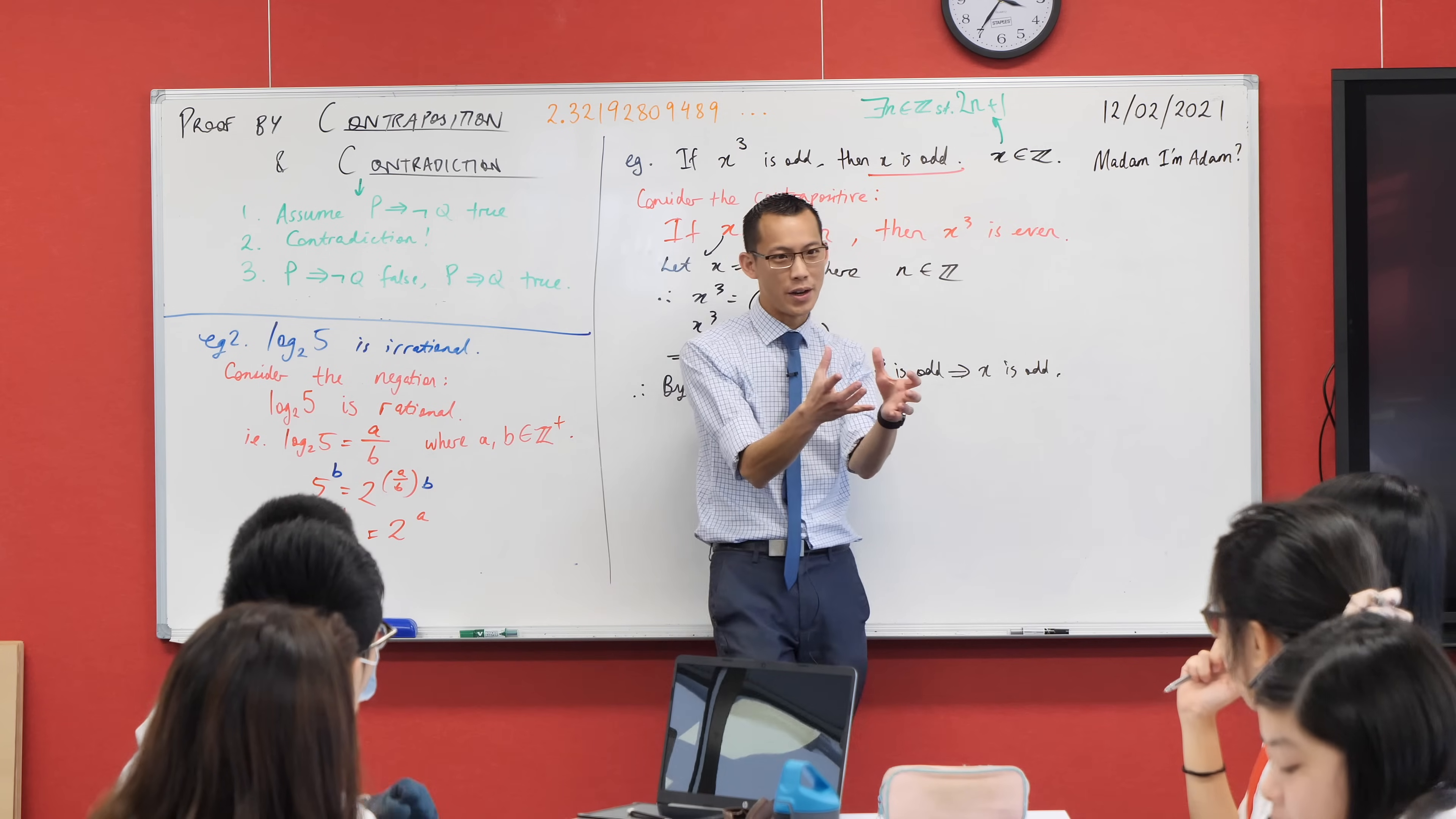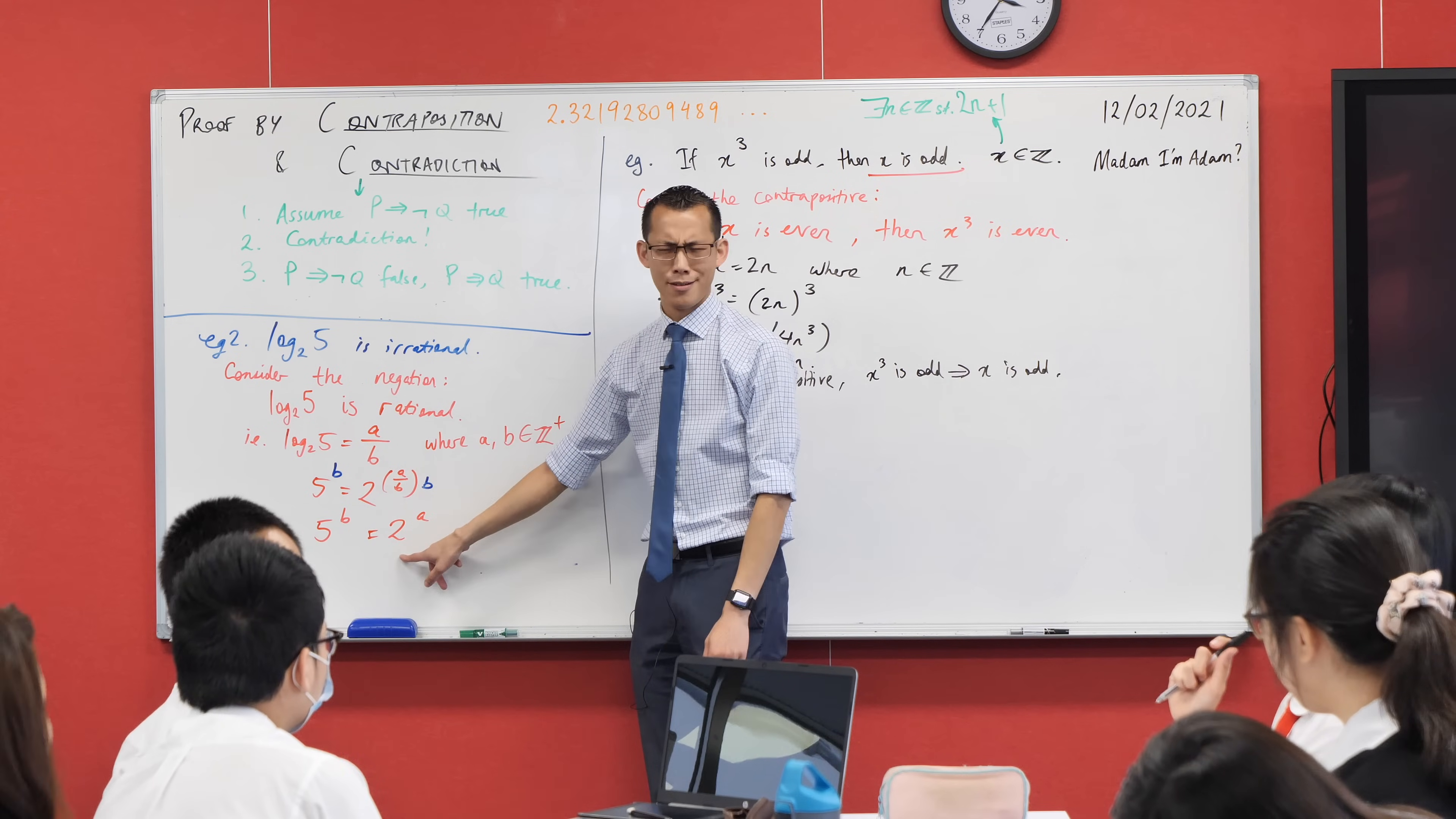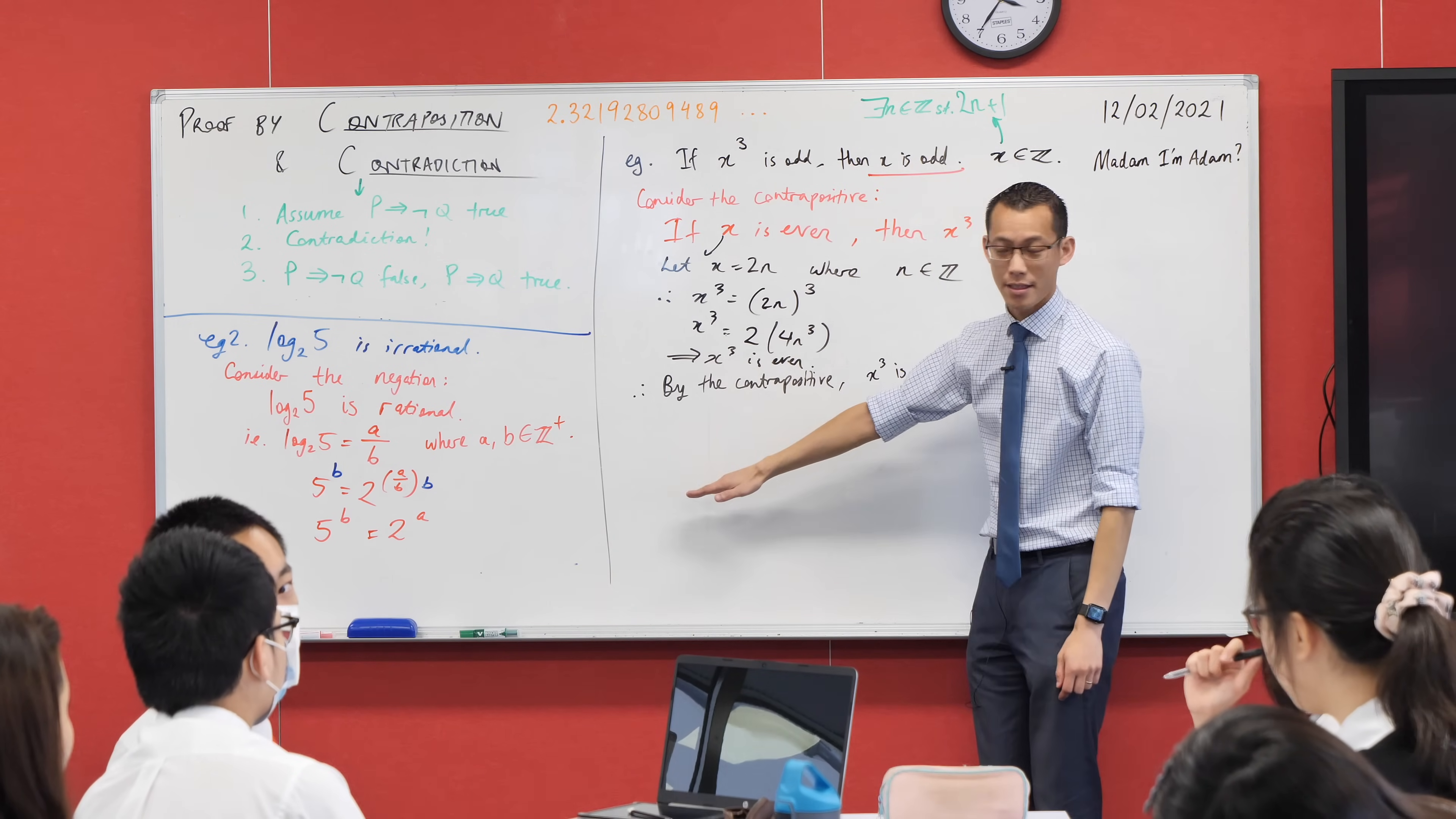They're all going to be odd, because you're starting with an odd factor, and that's all you're multiplying by again and again. So what I'm saying is there's some number that's odd, 5^b. It's equal to some other number that's even, 2^a. I've arrived. This is my contradiction.